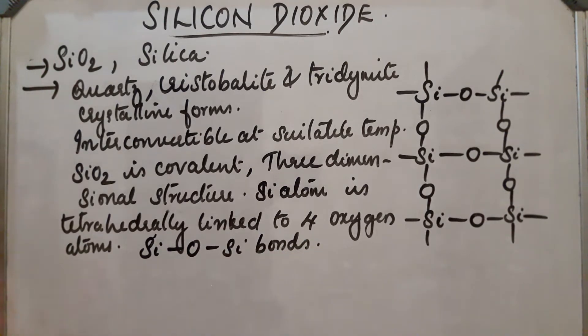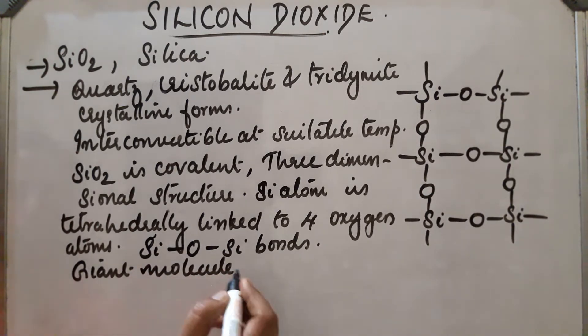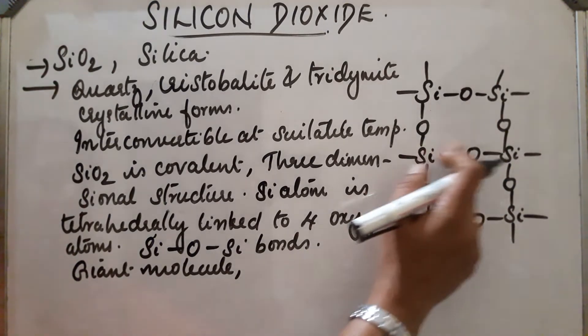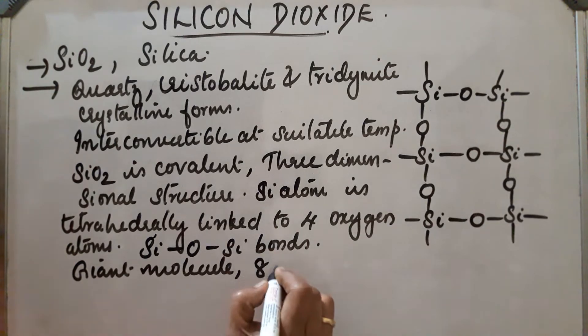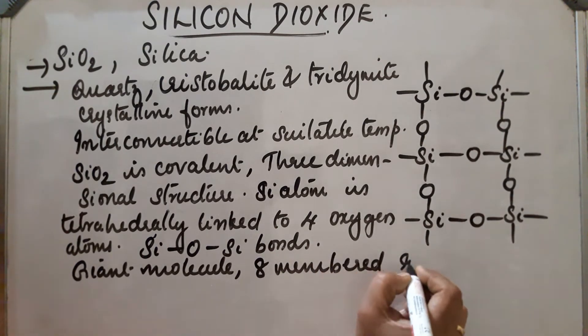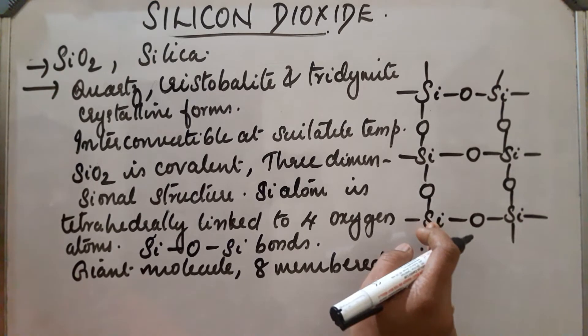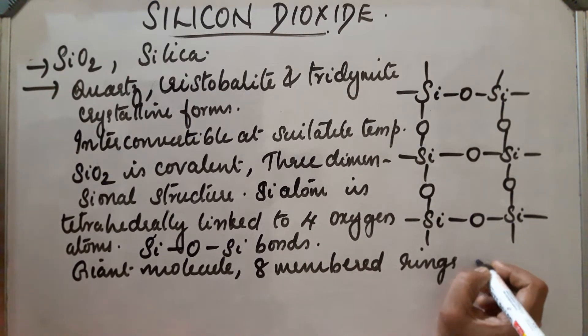This three-dimensional structure is a giant molecule in which it contains eight-membered rings with alternate Si and O atoms, with alternate silicon and oxygen atoms.